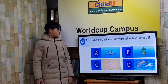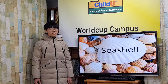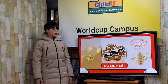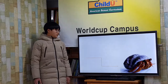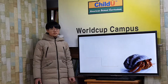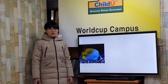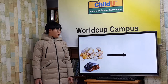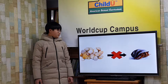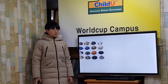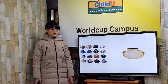This can be found in the ocean or along the shore. What is it? Shells! The shells you see along the shore are the coverings of small animals. The shell protects small animals from other animals. Once an animal leaves its shell, it can never return. The shells come in different shapes, colors, and sizes.